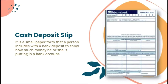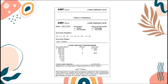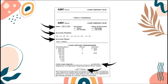Our next form is the cash deposit slip. It is a small paper form that the person includes with a bank deposit to show how much money he or she is putting into a bank account. It contains the deposit date, name, and bank account number of the depositor, and the amount to be deposited in the form of checks or cash, as well as the signature of the depositor. A person who deposits or places money in a bank account is called a depositor.